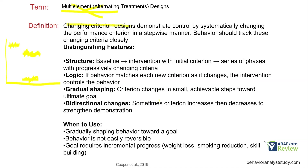Bidirectional changes also increase the strength of demonstration. If the criterion goes down, down, down, then back up, and behavior tracks those changes, that's a good sign. When should you use changing criterion? When gradually shaping behavior toward a goal — the behavior should already exist and you want to shape it within some magnitude. Also when behavior is not easily reversible, or the goal requires incremental progress where you can't change something overnight.